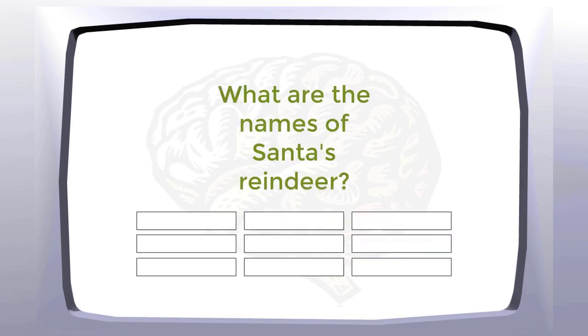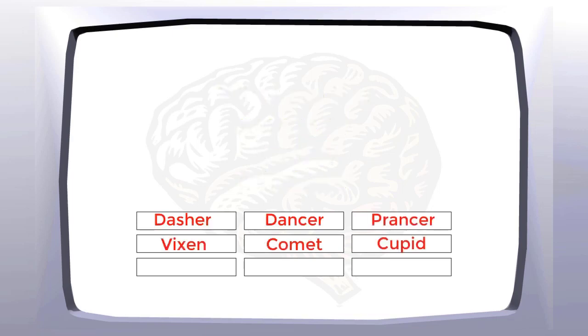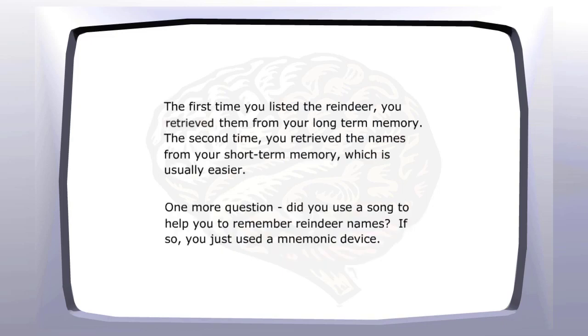Let's test your recall. Without going back, list the reindeer again. Did you get them correct? The first time you listed the reindeer, you retrieved them from your long-term memory. The second time, you retrieved the names from your short-term memory, which is usually easier.